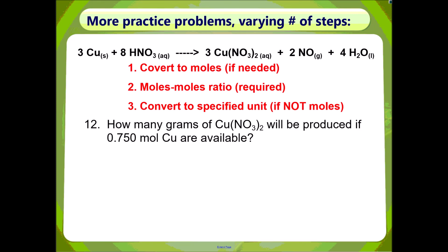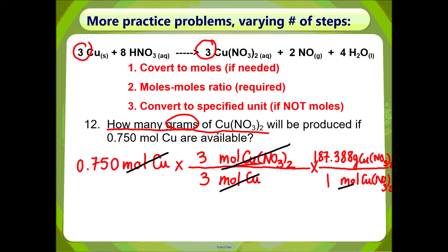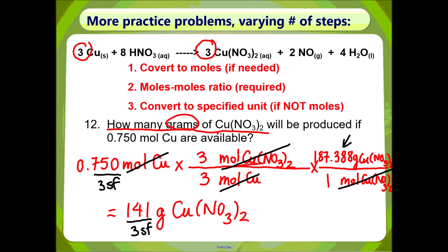Problem 12: now we are dealing with a new balanced equation. It asks how many grams of copper(II) nitrate will be produced if 0.750 moles of copper are available. Starting with the given of 0.750 moles of copper, you do not need Step 1 because you're already in moles. Go straight to Step 2, moles-to-moles ratio. Copper(II) nitrate goes on top because that's what the question is asking for; the numbers come from the coefficients in the balanced equation. Moles of copper will cancel with moles of copper. Step 3: get rid of moles of copper(II) nitrate on the bottom, and put grams of copper(II) nitrate on top. Your final answer is 141 grams of copper(II) nitrate, which has three sig figs, just like the given.